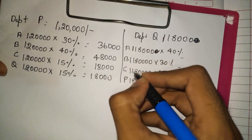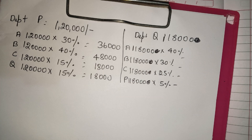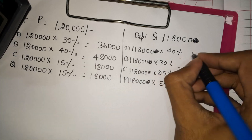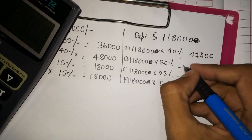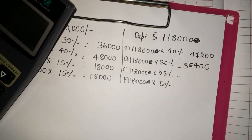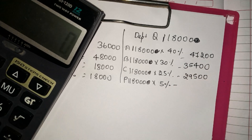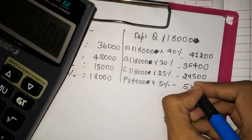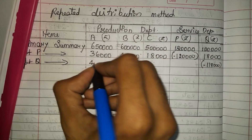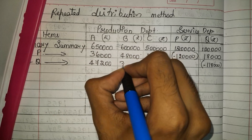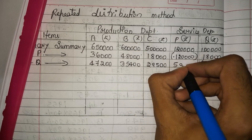So 1,18,000 into 40% will be 47,200. Next, 1,18,000 into 30% will be 35,400. 1,18,000 into 25% will be 29,500. And 1,18,000 into 5% will be 5,900. We write these amounts: A department 47,200; B department 35,400; C department 29,500; P department 5,900.